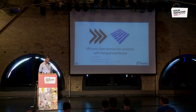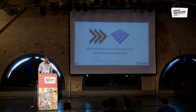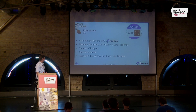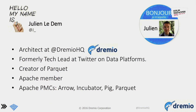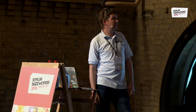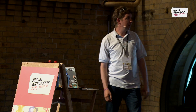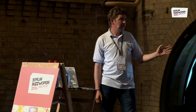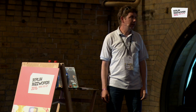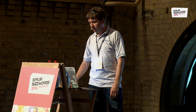Hi, I'm going to talk about Parquet and Arrow, both columnar formats. One is optimized for on-disk and the other for in-memory. I'm French and I live in California. I'm working at Dremio on big data analytics solutions. Before that, I worked at Twitter on the data platform where I started working on Parquet, and I'm an Apache member currently involved with Parquet and Arrow in the incubator, formerly working on Pig.